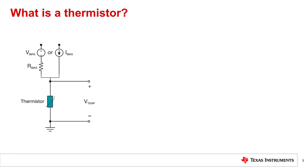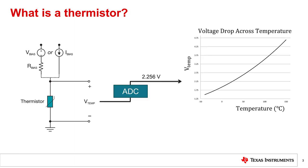Let's take, for example, a thermistor that is in a 25 degrees Celsius environment. Using an ADC, we can measure the voltage drop, VTEMP, across the thermistor and find that it is 2.256 volts. From there, you can use any temperature conversion method in software to calculate what temperature the 2.256 volts across the thermistor corresponds to. Once your MCU calculates the temperature, your system can then take the corresponding action depending on the value.